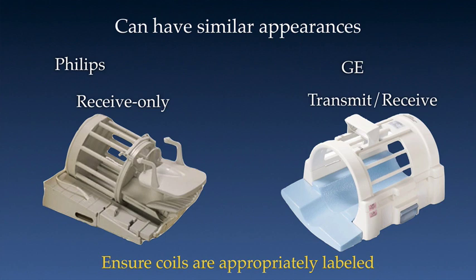It can be difficult to tell if a coil is transmit and receive or receive only simply by looking at it. As you can see here, depending on the vendor, they can have very similar appearances. On the left is a receive-only coil, and on the right is a transmit and receive coil. For safety purposes, it is very important to ensure that the coils are appropriately and properly labeled so that everyone knows whether they are using a receive-only coil or a transmit and receive coil. Some devices have conditions of use that specify a certain type of coil, so it is very important that they are very clearly labeled.